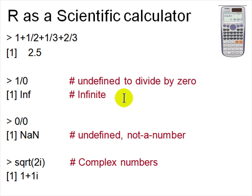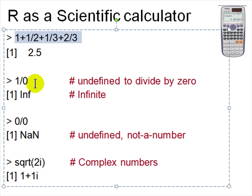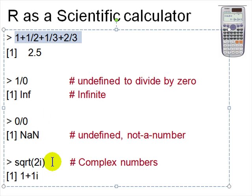R can also work as a scientific calculator. You can say '1 + 1/2 + 1/3 + 2/3' and R gives 2.5. One important difference: R allows for infinity and undefined objects. '1/0' gives Inf (infinite). '0/0' gives NaN — not a number, as in computer hardware. R also automatically handles complex numbers; for example, square root of -2 gives '1 + 1i'. So complex numbers, undefined, infinity, and NaN are all built into R.